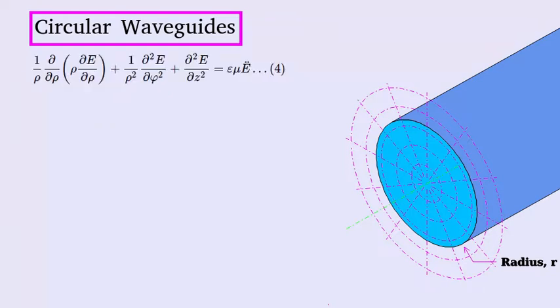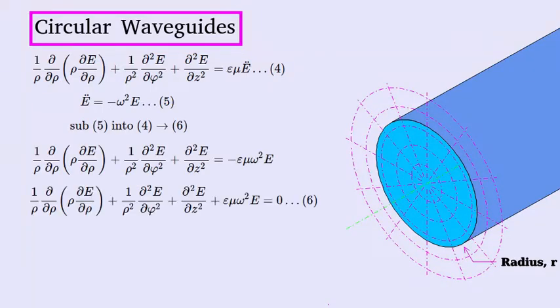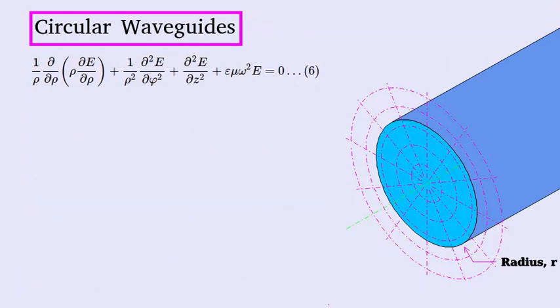I'll just rewrite this equation at the top of the screen here. The second derivative of E with respect to time is this, since we are exciting this waveguide with a sinusoidal signal with angular frequency omega. Then we can make this substitution to get this equation, which can be manipulated to be this equation, and this equation describing H can be derived in a similar way.